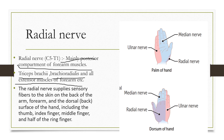The sensory supply of the radial nerve covers the back of the arm, back of the hand, and also the palm of the hand. On the back of the hand, it supplies the thumb, index finger, middle finger, and half of the ring finger. On the palm side, it supplies the back of the thumb.